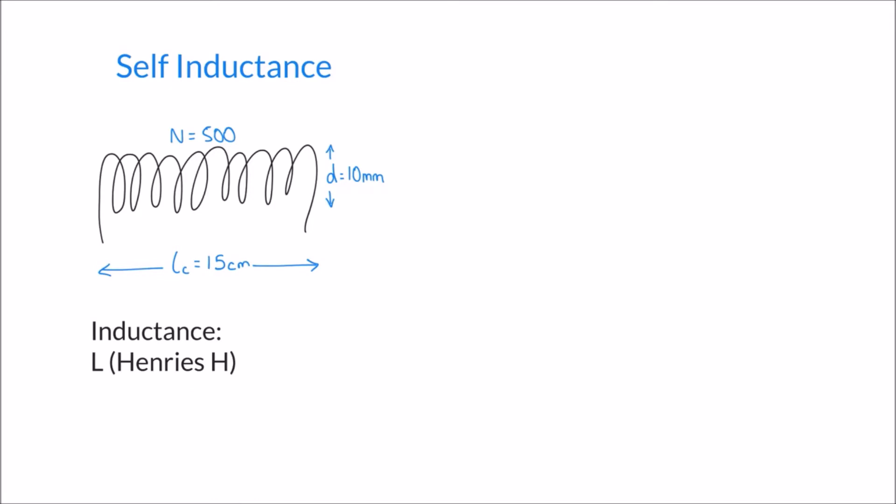We can think of inductance as a measure of the coil's ability to build up magnetic energy. Electromagnets and electric motors are all examples of inductors — they all consist of coils of wire that build up a magnetic field when current passes through them. But for this to happen, the coil needs to have inductance.